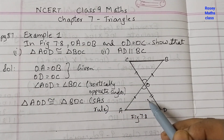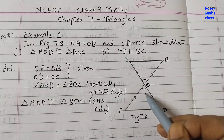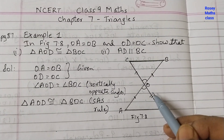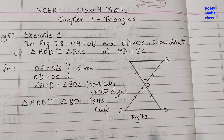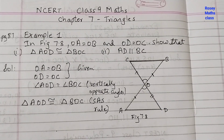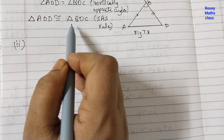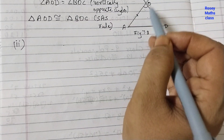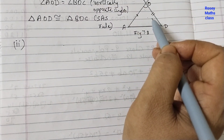These two triangles are congruent by the SAS (Side-Angle-Side) rule. When two sides and the included angle — the angle in between those two sides — of two triangles are the same, then those two triangles are congruent. Since these two triangles are congruent, their corresponding sides and corresponding angles are also equal.